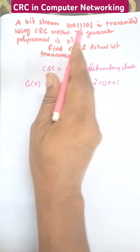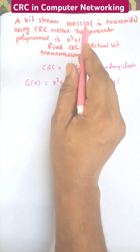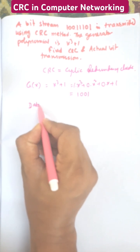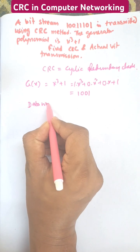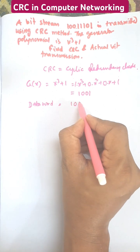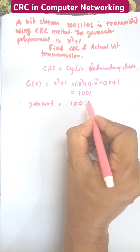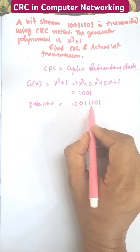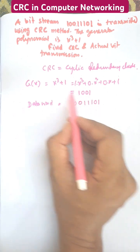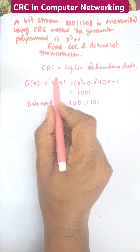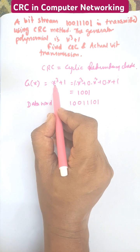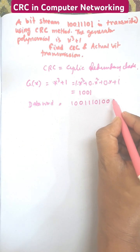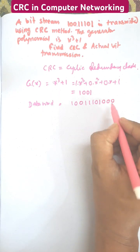The data word given is 10011101. We need to add some zeros depending on the divisor. The power of the divisor is 3, so we need to add 3 zeros. That is a very important thing.